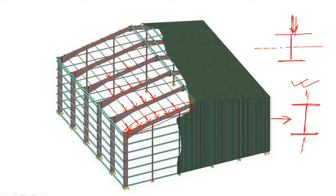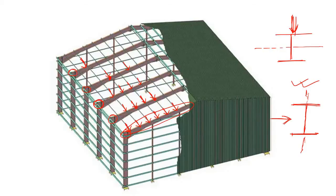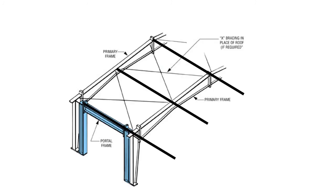To carry all this lateral load, either you need to use a very heavy eye section, or the second option is you can simply bypass this lateral load directly to the column — directly from this point to any of the columns. How can you do that? We can do that by the use of bracings. That is the function of bracing: we simply direct any lateral load here directly to the column, without giving any stress to the rafter due to lateral load.